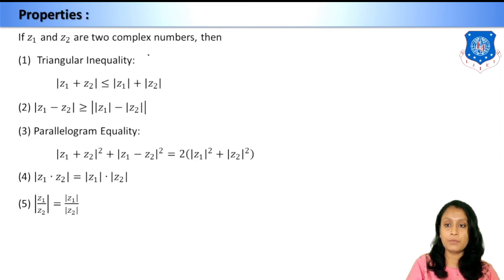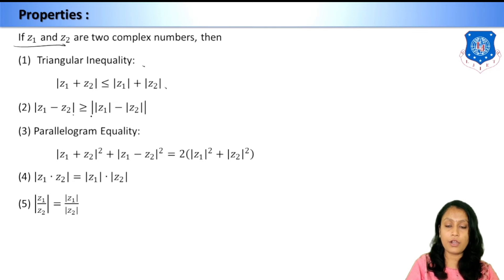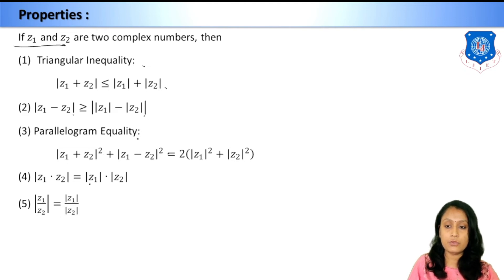For two complex numbers z₁ and z₂, the triangle inequalities are: |z₁ + z₂| ≤ |z₁| + |z₂|, and |z₁ − z₂| ≥ ||z₁| − |z₂||. The parallelogram equality states: |z₁ + z₂|² + |z₁ − z₂|² = 2(|z₁|² + |z₂|²). Also, |z₁·z₂| = |z₁|·|z₂| and |z₁/z₂| = |z₁|/|z₂|.